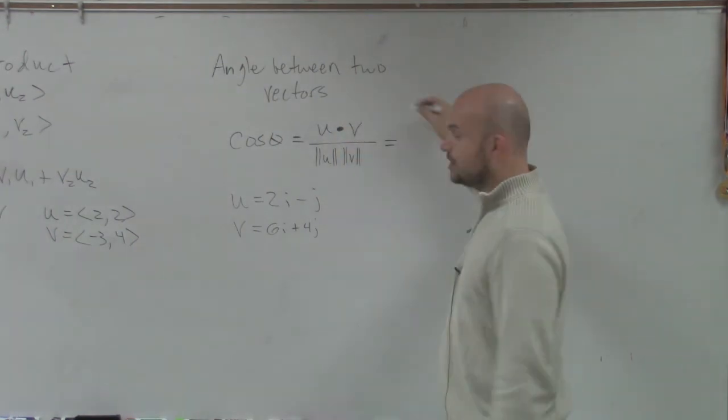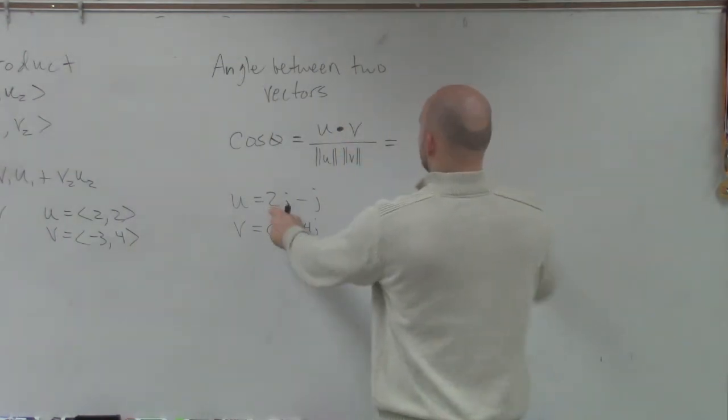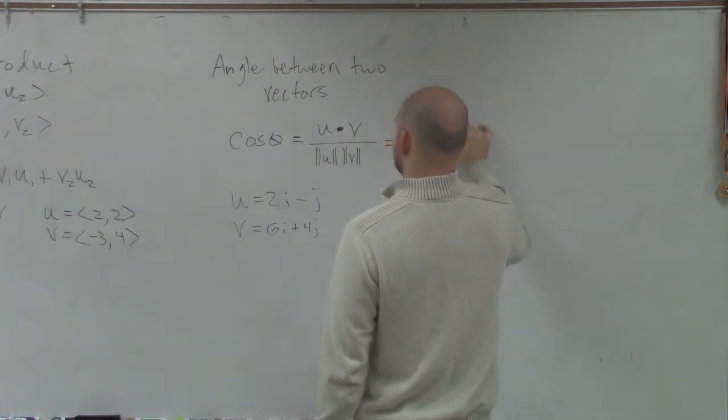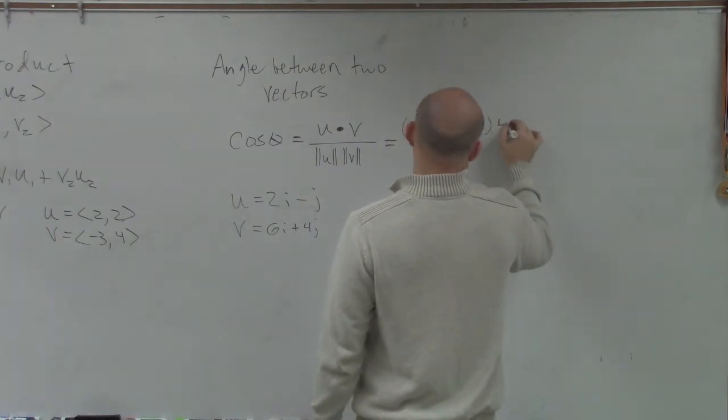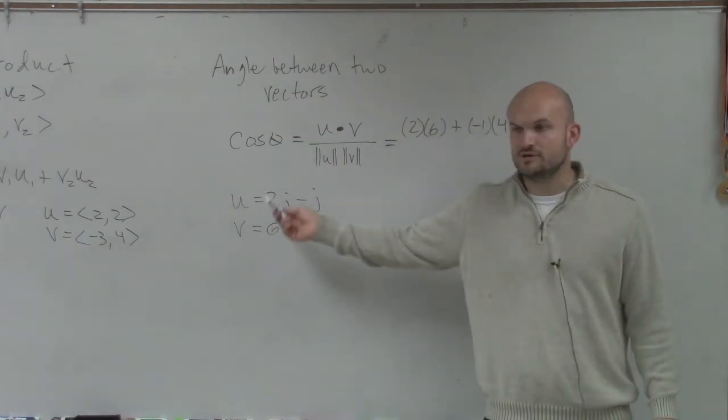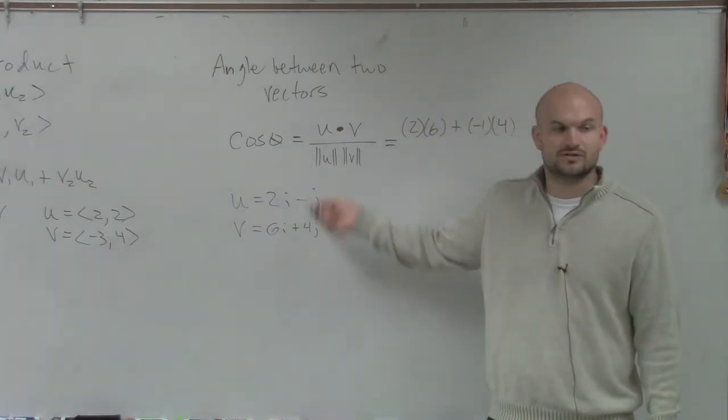So the dot product, again, all you need to do is multiply. So I'll multiply 2 times 6 plus negative 1 times 4, right? You multiply your first two terms of your vectors, add them to the multiplication of the second two.